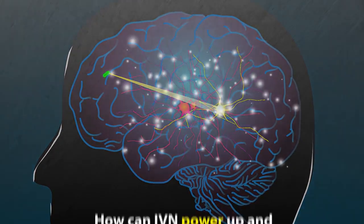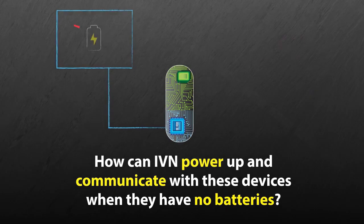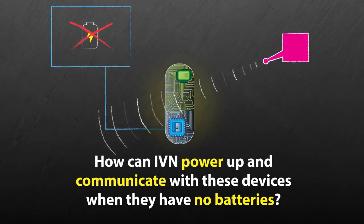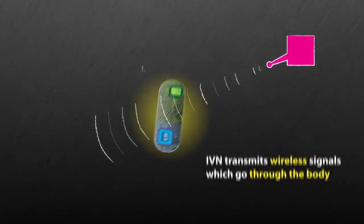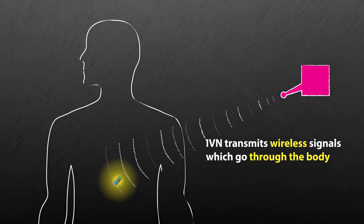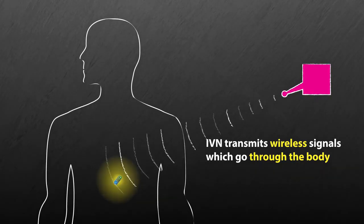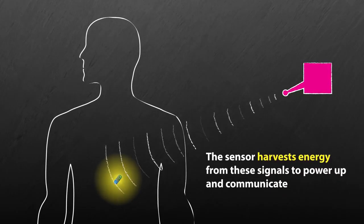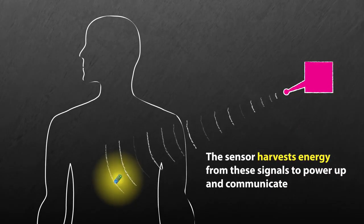So, how can IVN power up and communicate with these devices when they have no batteries? When IVN transmits a wireless signal, the signal goes through the body and reaches the tiny implanted sensor. The sensor harvests energy from these signals to power up and communicate.